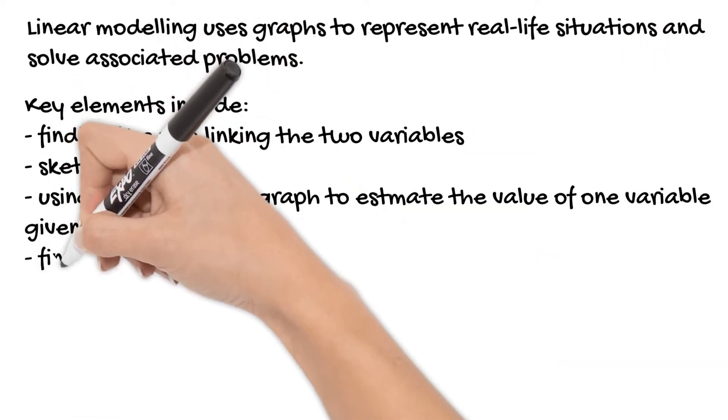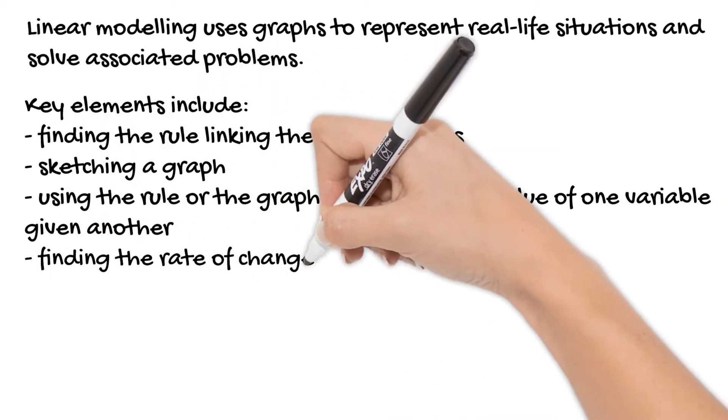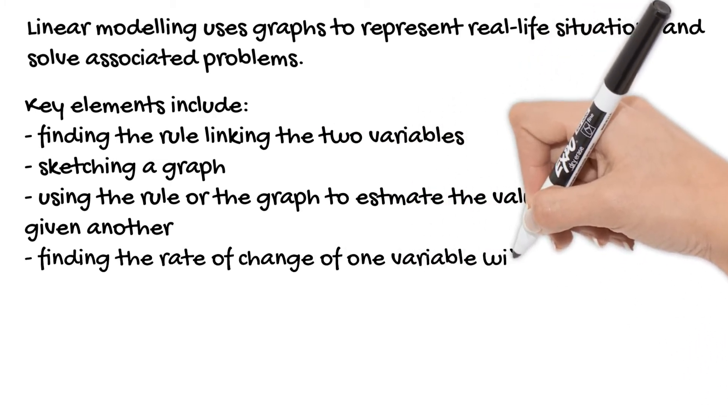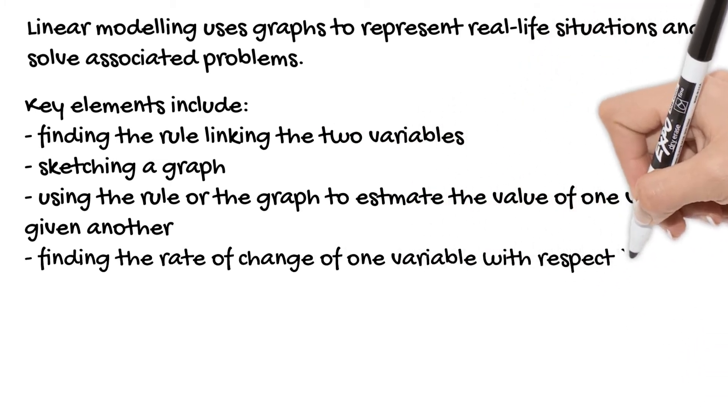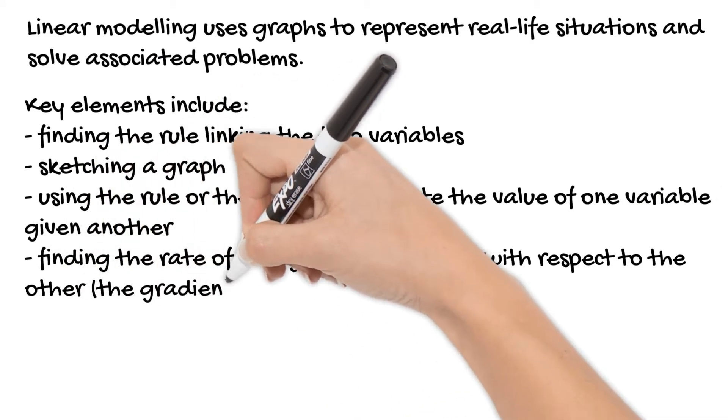We can also use our linear model to find what's called the rate of change of one variable with respect to the other. So basically, the rate of change is the gradient in a practical situation.